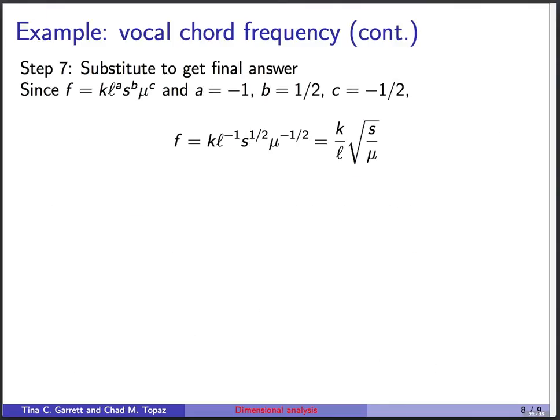So now we substitute that information in. Here was our original expression. We now know the values of A, B, and C. And what we find is that frequency is K, L to the minus one, S to the one-half, mu to the minus one-half. We can remember that a half power means a square root, and a minus means put it in the denominator. So we can actually write this as frequency equals K over L square root of S over mu.